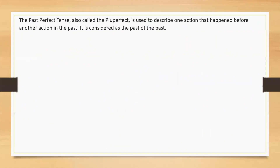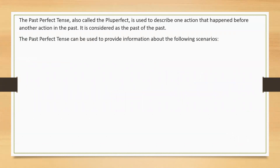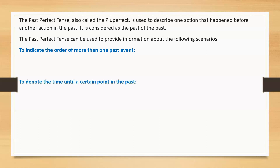The past perfect tense, also called the pluperfect, is used to describe one action that happened before another action in the past. It is considered as the past of the past. The past perfect tense can be used to provide information about scenarios, to indicate the order of events in the past, to denote the time until a specific point in the past, representing an incomplete action that was not done in a specific time in the past, before another simple past action.